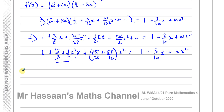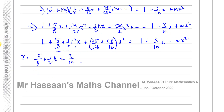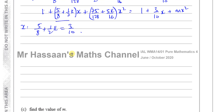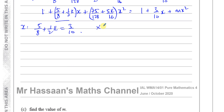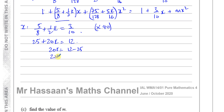Comparing x terms: 5/8 + k/2 = 3/10. Multiplying through by 40: 25 + 20k = 12, so 20k = −13, giving k = −13/20.